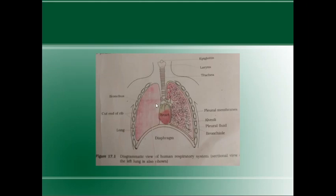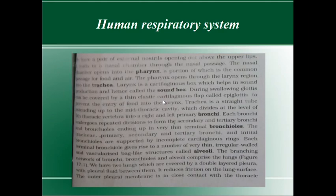Trachea divides into right bronchus and left bronchus. This division is at the point of the fifth thoracic vertebra.